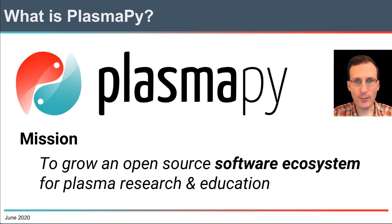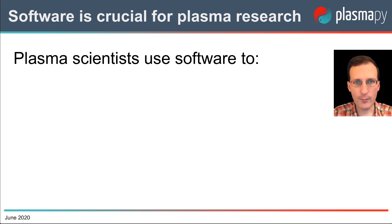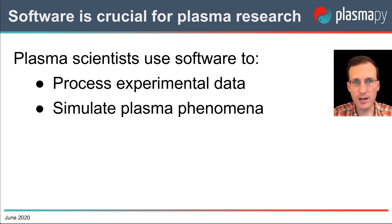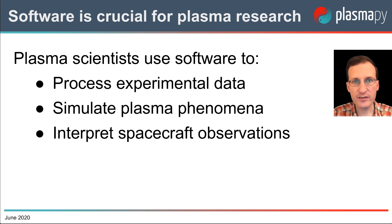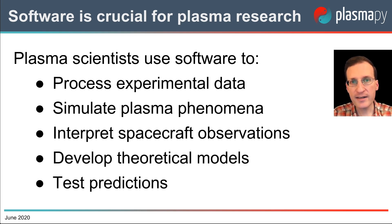Let's step back a moment and talk about our motivation for the project. Software is crucial for every area of modern plasma research. For example, we use software to process and analyze experimental data, to simulate plasma phenomena, to interpret in-situ observations of space plasma, to develop theoretical models to explain plasma behavior, and to test our theoretical predictions against how plasma actually behaves in nature or the laboratory.